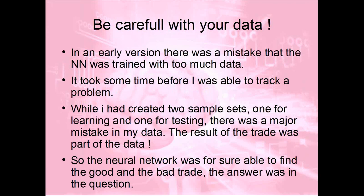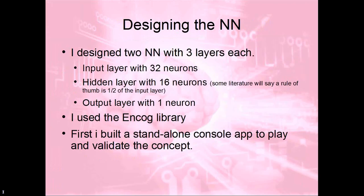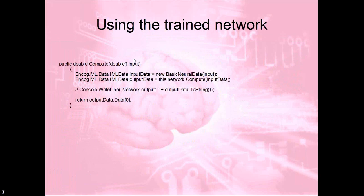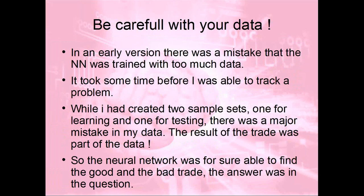One thing to be careful about: be careful with your data. In a very early version I made a mistake — I created the logging data carelessly. I trained my neural network and it had more neurons. What the neural network learned was actually the profit we had made — the answer was already in the training data. The network was very good at recognizing the training data, but as soon as you test with other data, you'll see it's off track. If you train the network, you must be sure the answer is not in the data.